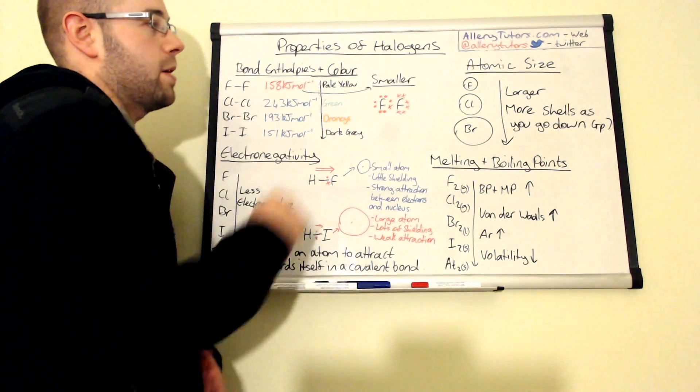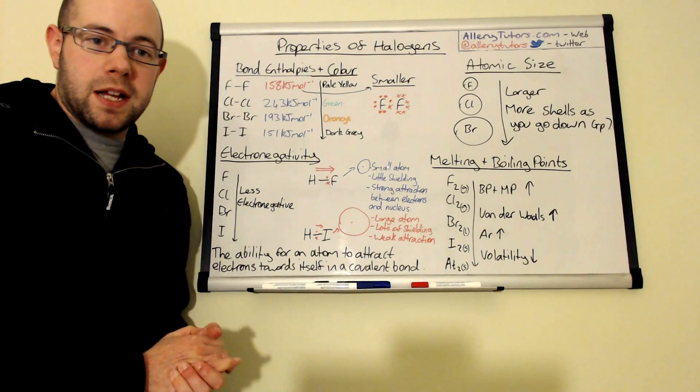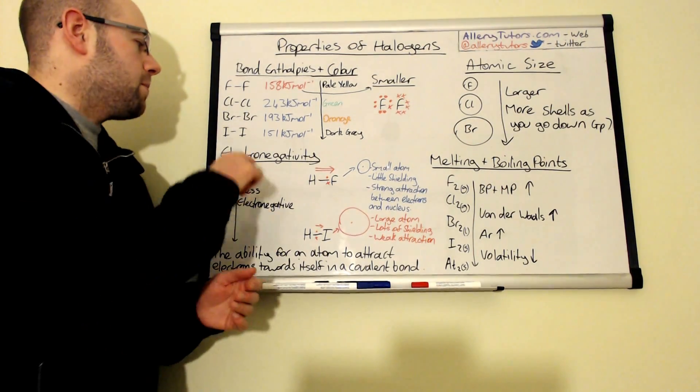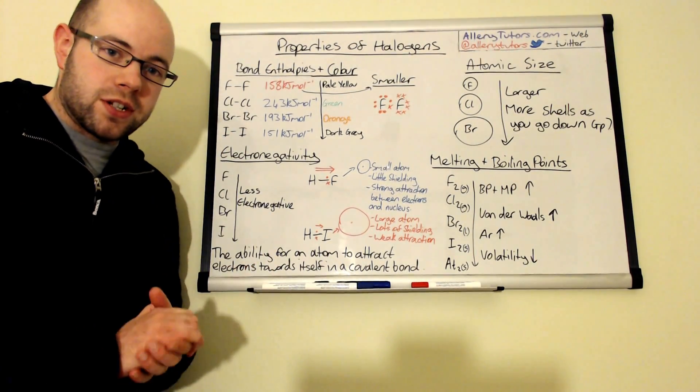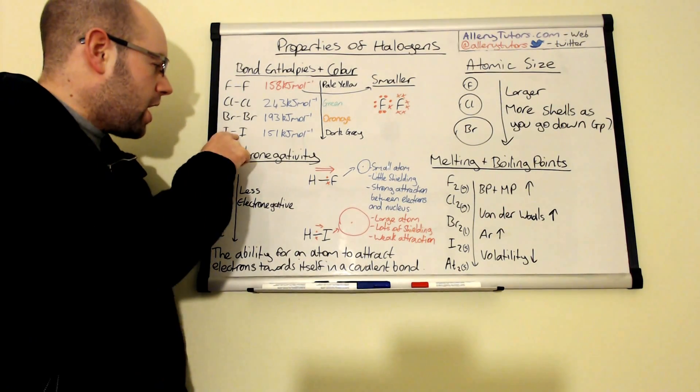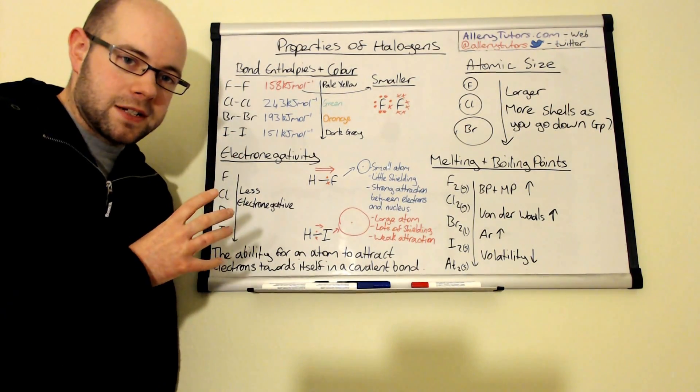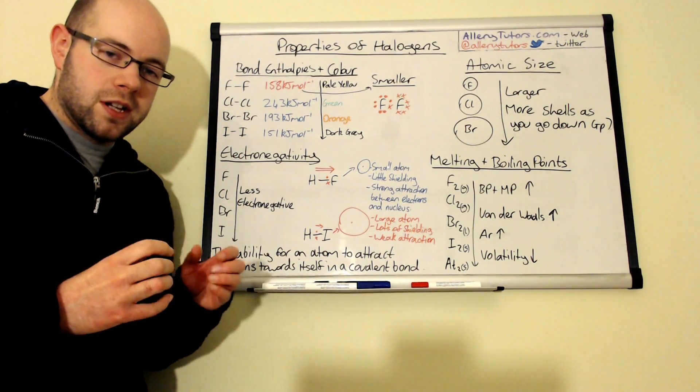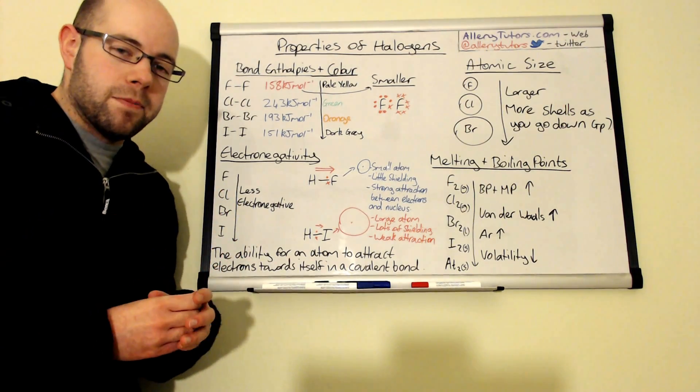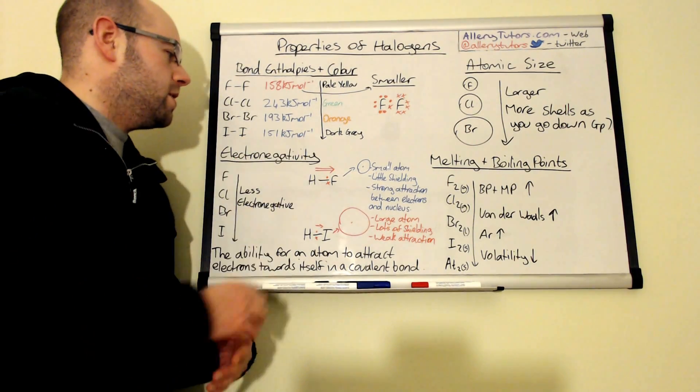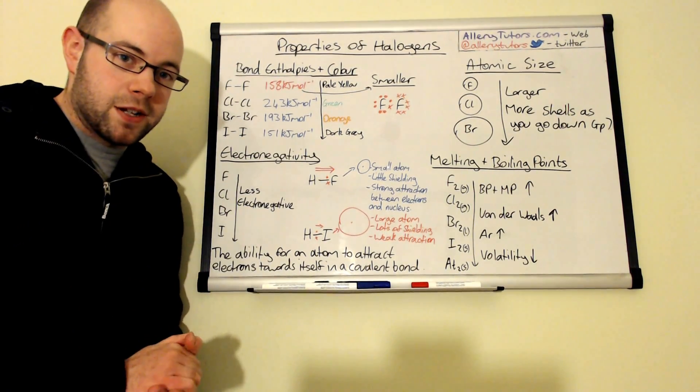Now as we go further down the group obviously the atom gets a lot bigger, gets a lot larger and that's what I've got over there with atomic size and it gets a lot larger because you have more shells. Now what that means is affecting the attraction between the shared pair of electrons between the atoms and the nucleus in the middle is obviously a lot weaker and because that's weaker then the bond actually gets weaker as well as we go down.